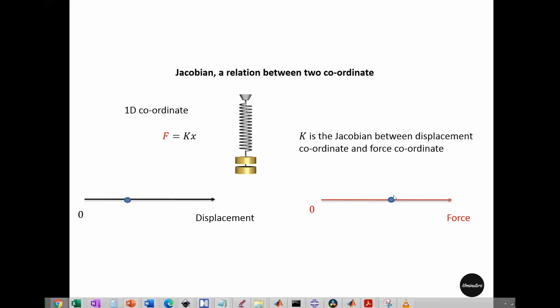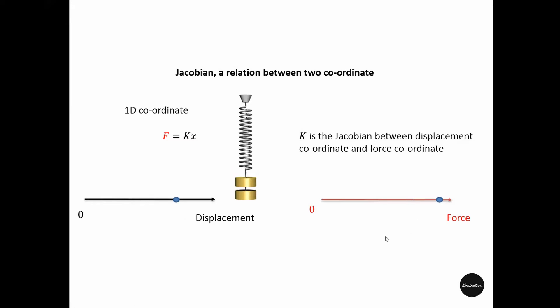If you pull the spring further, the required force also changes. These two coordinate systems are related by this stiffness k, so k is the Jacobian between displacement and force. So basically, the concept of Jacobian is something that can convert one coordinate system to another.